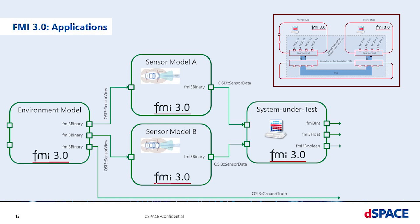The second application is from the ADAS domain. Consider you have a system under test, maybe trajectory planning or something like that. You have an environment model which generates ideal world data, the so-called ground truth. This ground truth data is ideal data of an ideal world, so you cannot really test the algorithm itself. You can introduce sensor models in between — they consume the data and modify it to make it more realistic. With that, you are able to increase the testing possibilities of the system under test.